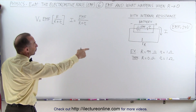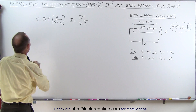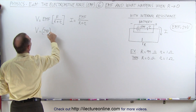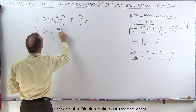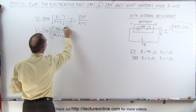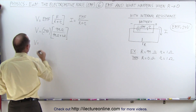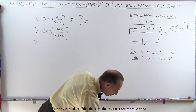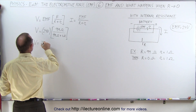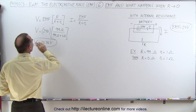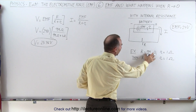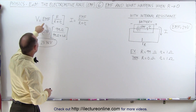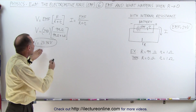Let's start with our first example where resistance is 99 ohms and the internal resistance is 1 ohm. The voltage supplied to the circuit is going to be the EMF, which is 24 volts, multiplied by the ratio of 99 ohms divided by 99 ohms plus 1 ohm, which is 100 ohms. So the voltage supplied by the battery is 24 times 0.99, which is 23.76 volts. The voltage supplied to the circuit is almost equal to the EMF — just slightly less — so the internal resistance doesn't really matter much.